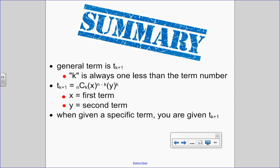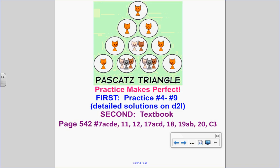When you're given a specific term — like solving for a or finding a constant value — that given term is really the t_{k+1}, the general term. And in the last lesson we learned about Pascal's triangle, but how about 'pass cat's triangle'? Maybe that can catch on.